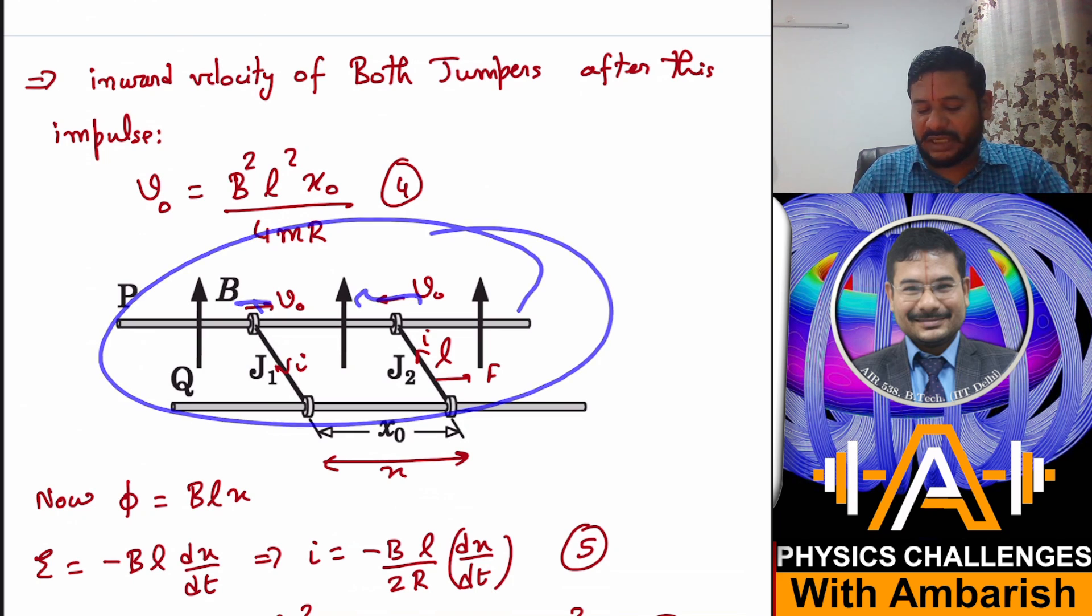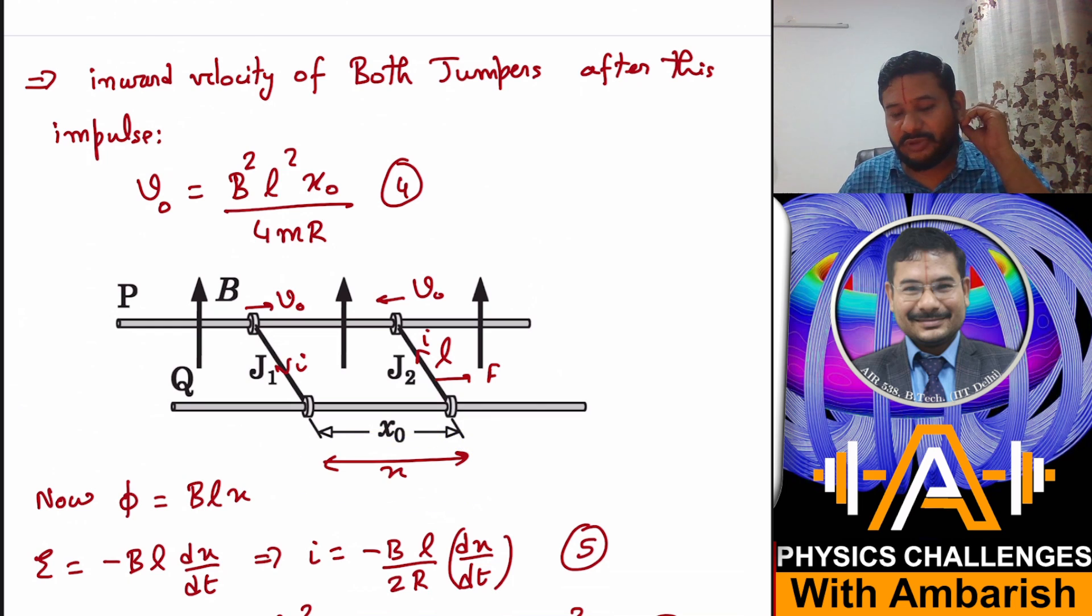So this is the scenario - v₀ velocity inwards and initial separation x₀. And x I am calling a separation at general instant of time. I did not bother to make a fresh figure but you can take x at a general time and x₀ is the separation immediately after switching on the field.